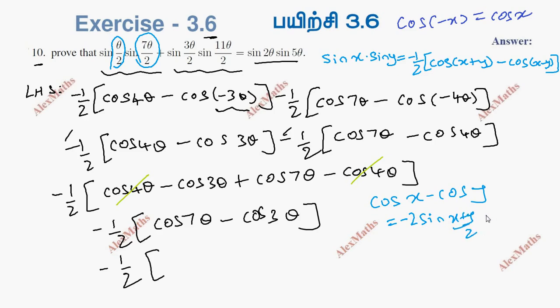Applying this formula, we get the sum as 5 theta into sine of the difference by 2, which gives us 2 theta.